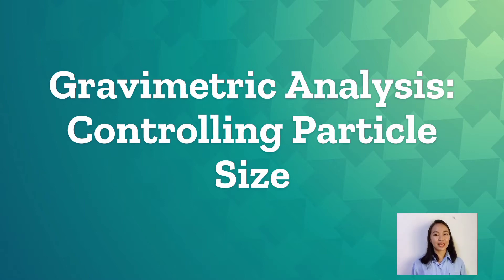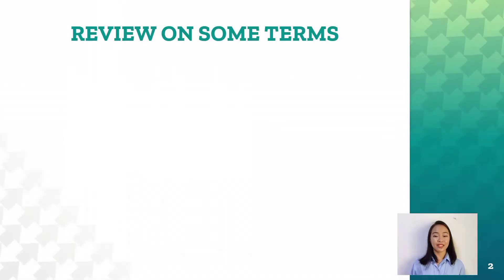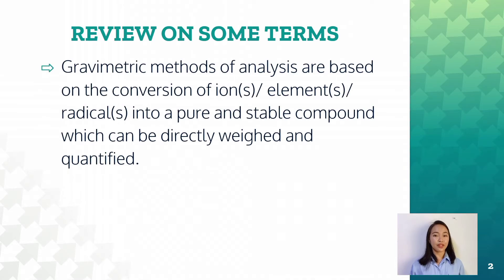Before we dwell on the main topic, let us have a review on some terms. Gravimetric methods of analysis are based on the conversion of ions, elements, radicals into a pure and stable compound which can be directly weighed and quantified.